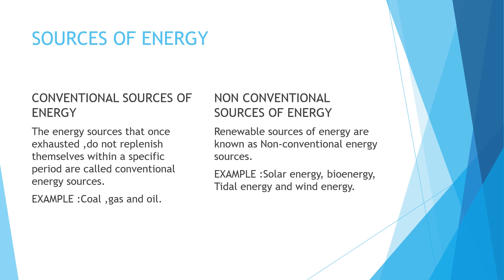We have two sources of energy: conventional sources and non-conventional sources. Conventional sources of energy are those that, once exhausted, do not replenish themselves within a specific period — these are non-renewable energy. Examples are coal, gas, and oil. Once they are over, they cannot be formed again. As we all know, oil, gas, and coal are going to exhaust in the next 100 years, so these are not dependable.